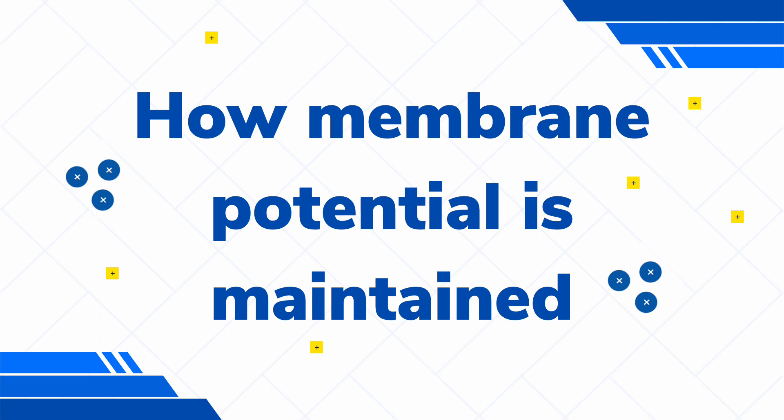Hi everyone. In this lecture, we'll be talking about how membrane potential is maintained in the cell. In our previous lecture, we learned that the membrane potential of the cell is negative — the outside of the cell is positively charged and the inside is negatively charged. In this lecture, we will learn about the two types of proteins that contribute to these differences in charges.